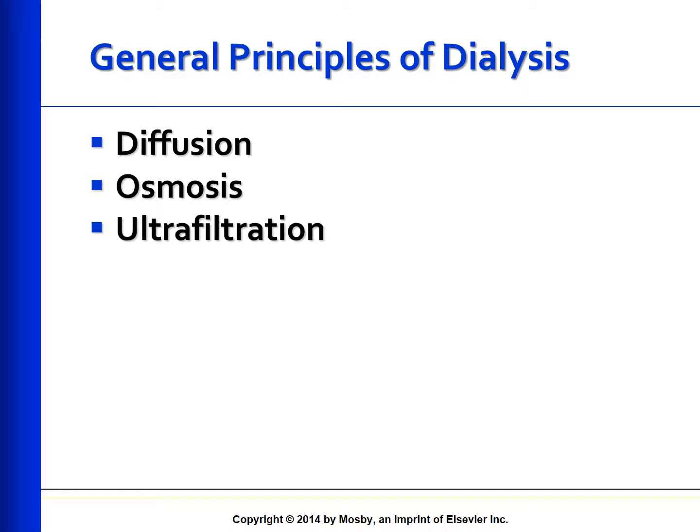Ultrafiltration removes water and fluid through an osmotic gradient. In PD, excess fluid is removed by increasing the osmolality of the dialysate with the addition of glucose. In HD, the gradient is created by increasing the pressure in the blood compartment (positive pressure) or decreasing pressure in the dialysate compartment (negative pressure).